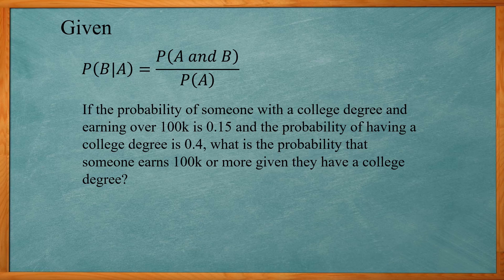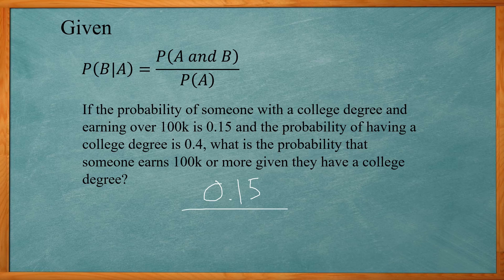The word "given" means that some event has already occurred. The formula is: the probability of B given A equals the probability of A and B divided by the probability of A. For example, if the probability of having a college degree and earning over $100K is 0.15, and the probability of having a college degree is 0.4, the probability of earning $100K or more given a college degree is 0.15 divided by 0.4, which equals 0.375.